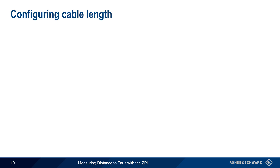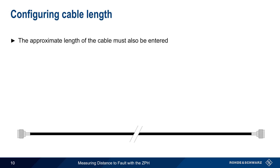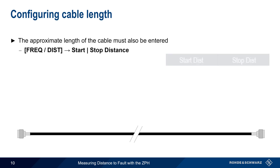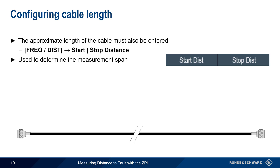In addition to the cable model, the approximate length of the cable must also be entered. This is done by pressing the Frequency Distance hard key, and then choosing Start Distance and Stop Distance. The main reason why cable length must be specified is that the length is used to determine the measurement span or frequency range. The longer the cable, the smaller the measurement span.